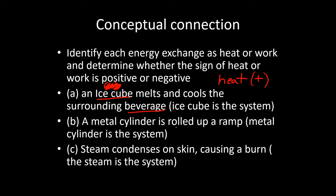So the second one here, we have a metal cylinder that's rolled up a ramp. The metal cylinder is our system. This is going to be work. We have something that is moving, something that is pushing the metal cylinder up the ramp, which then also answers the second question, which is that this is positive work. If the metal cylinder is the system, something is moving it, something is doing work to the system, and so therefore that is positive work.